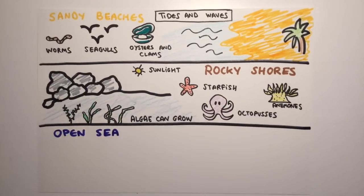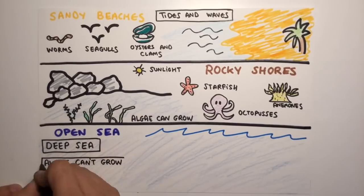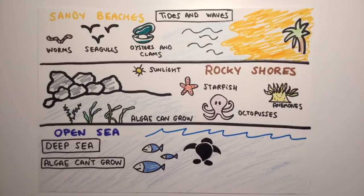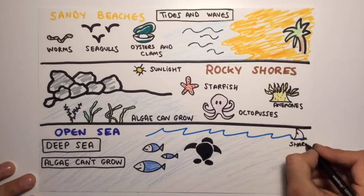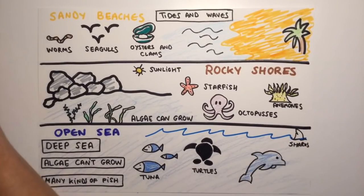Finally, the open sea. This is the deep sea far from the coast. Sunlight reaches depths of about 100 meters, so algae can't grow below this point. The open sea is home to jellyfish, sea turtles, sardines, tuna, sharks, dolphins, whales, and many kinds of fish.